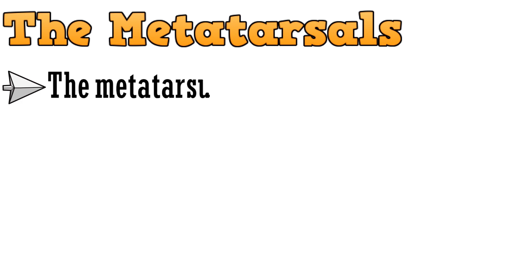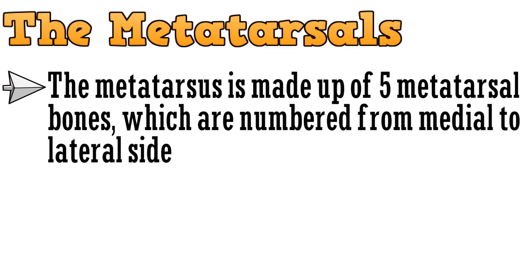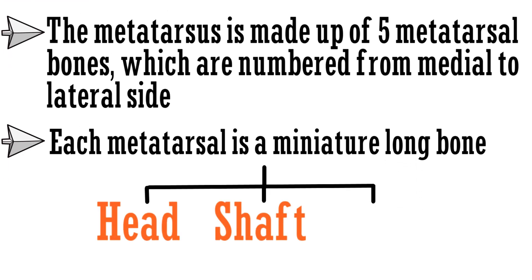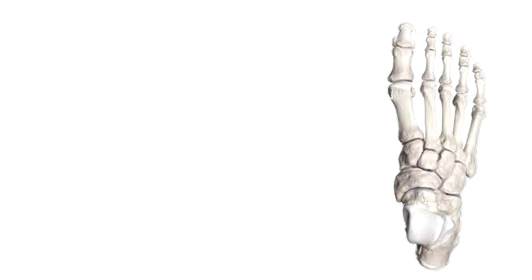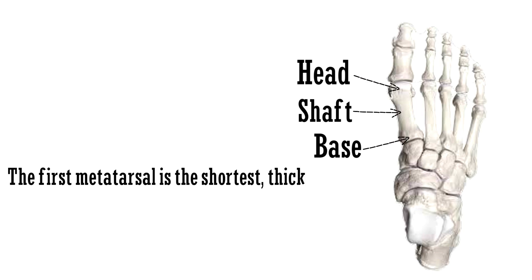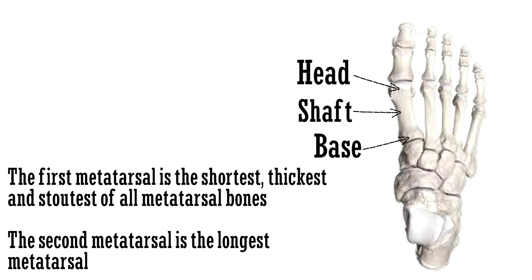The metatarsus is made up of five metatarsal bones, which are numbered from the medial to lateral side. Each metatarsal is a miniature long bone that has a head, shaft, and a base. These five bones are the metatarsals. The head is placed distally, this is the shaft, and the base is placed proximally. The first metatarsal is the shortest, thickest, and stoutest of all metatarsal bones. The second metatarsal is the longest. The lateral side of the base of the fifth metatarsal has a large tuberosity.